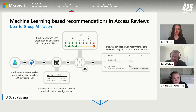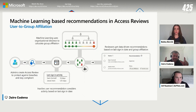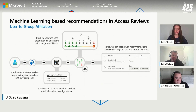We have a specific algorithm that we have just released — the user-to-group affiliation. It basically looks at how far the requester is in the organizational structure, and calculates the group affiliation with the access package or whatever it is they are trying to get access to. If it has a low affiliation, that will be surfaced into the My Access Portal review user interface where the reviewer will be able to see that.